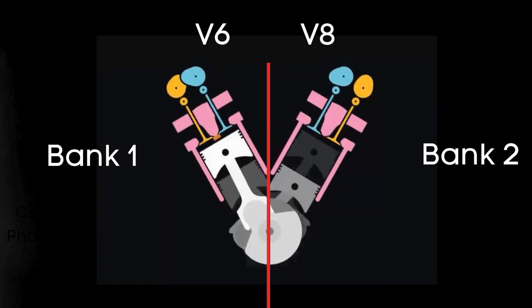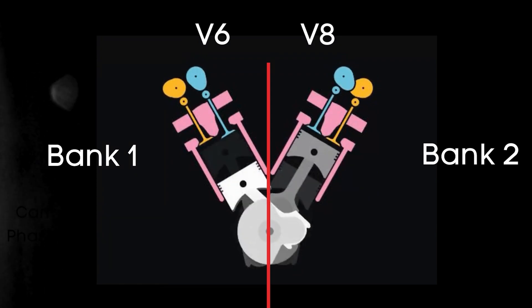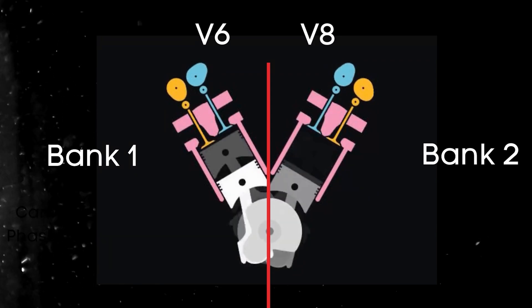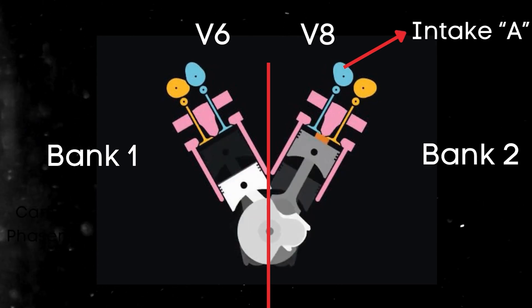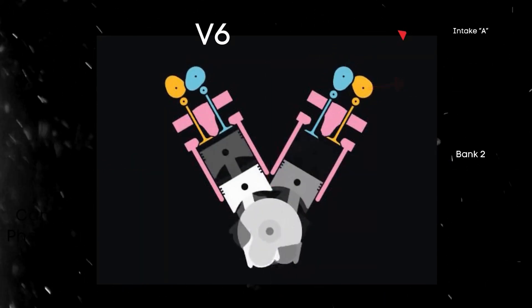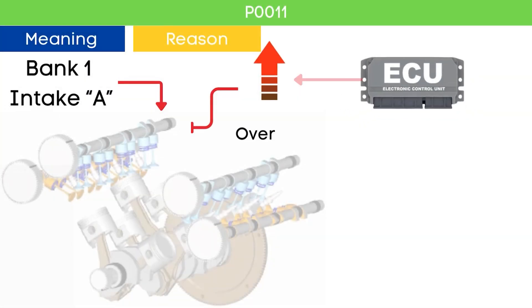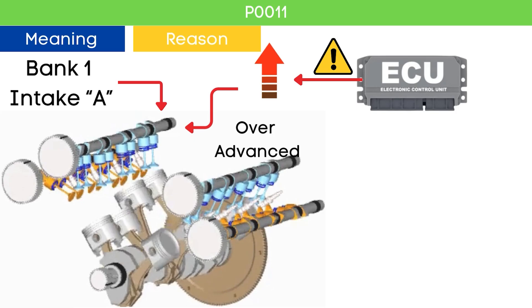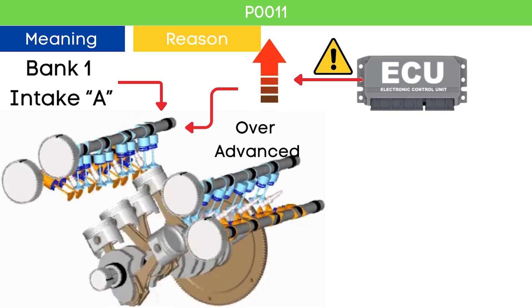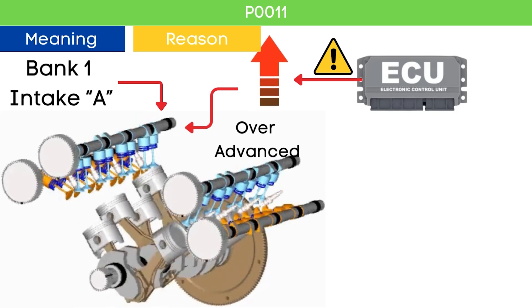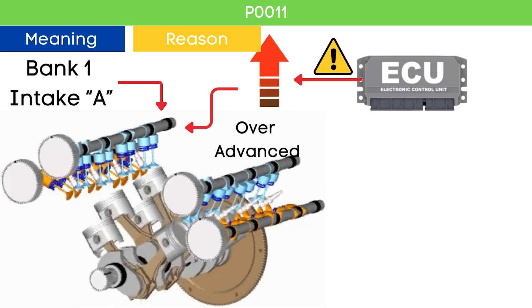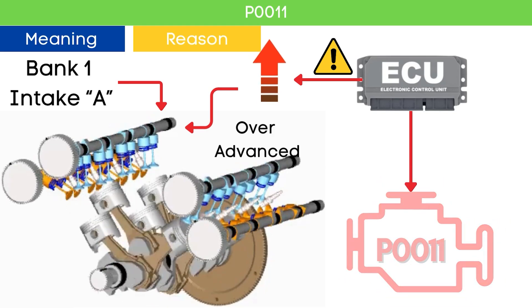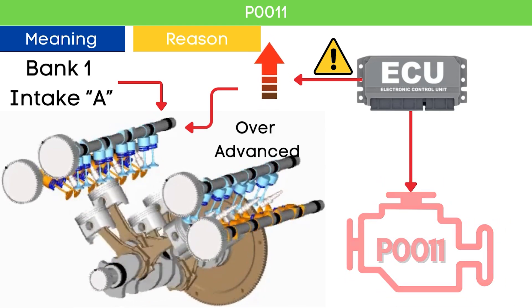For dual overhead camshaft DOHC engines, there are two camshafts per bank: intake and exhaust. When the ECU detects that the Bank 1 intake camshaft position is over-advanced compared to the targeted cam angle, it triggers the P0011 Code.